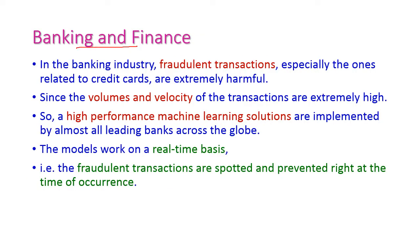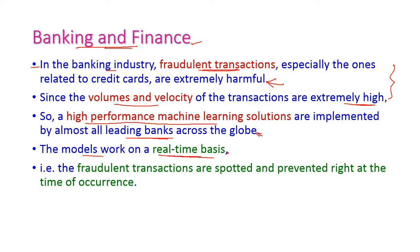The first application is banking and finance — that is, machine learning algorithms in banking and finance. The fraudulent transactions are very harmful, and the volume and velocity of those transactions are extremely high. To predict and overcome these problems, high-performance machine learning algorithms are implemented in almost all banks, and the model works on a real-time basis, preventing or stopping all fraud transactions at the time of occurrence itself.